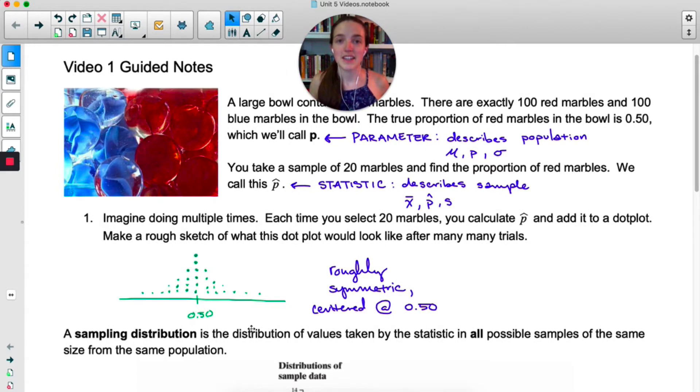Now repeatedly taking a sample of the same size over and over and over can lead you to what's called a sampling distribution. The definition of a sampling distribution is so important that I typed it for you. A sampling distribution is the distribution of values taken by the statistic, in this case p hat, in all possible samples of the same size from the same population.